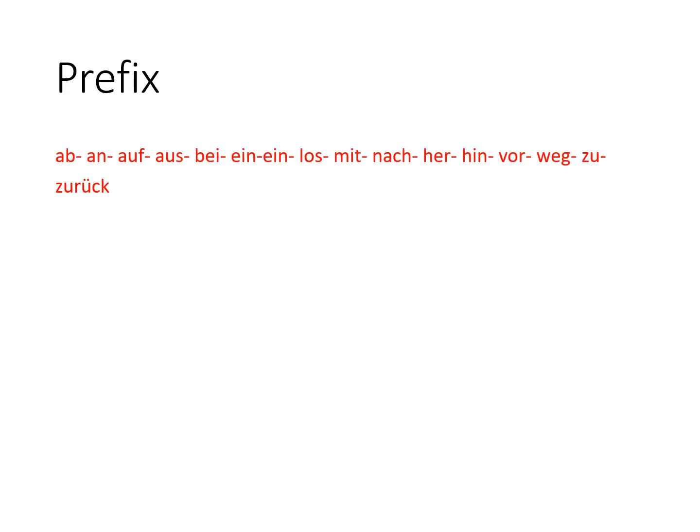Here you can see a list of prefixes which I have written down for you. These are the mostly used prefixes in German language. We have: ab, an, auf, aus, bei, ein, los, mit, nach, her, hin, vor, weg, zu, and zurück. The important thing is to know that some of these words are also prepositions in German, but you should not get confused — we also have 'auf' as a preposition but also as a prefix. So over here we have a list of prefixes which are very common in the German language.